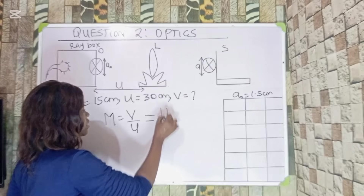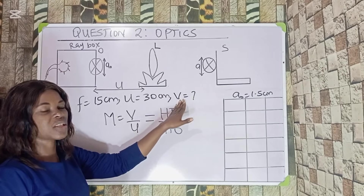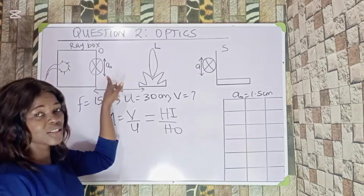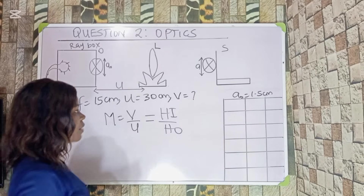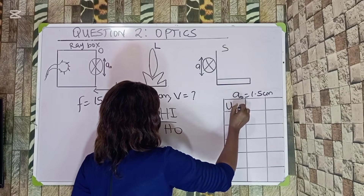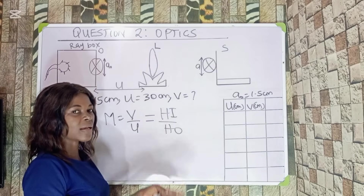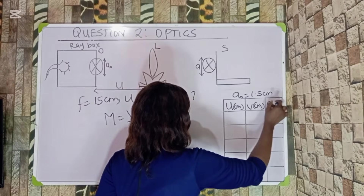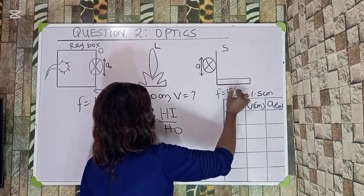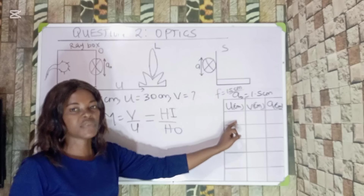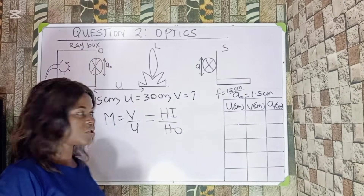Magnification is also equal to the height of the image over the height of the object. So once you have v, and since you already know the height of the object (h₀), you can calculate the image size. In the table, I have u in centimeters, v in centimeters, and a (image size) in centimeters. The focal length f remains constant at 15 centimeters throughout.